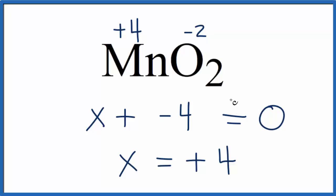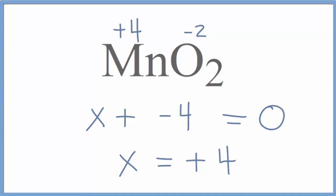You could have just looked at it and said, I've got a negative four total here, so that has to be positive four to equal zero, but this might be a more thorough way to do it. This is Dr. B with the oxidation number for Mn in MnO2, and thanks for watching.